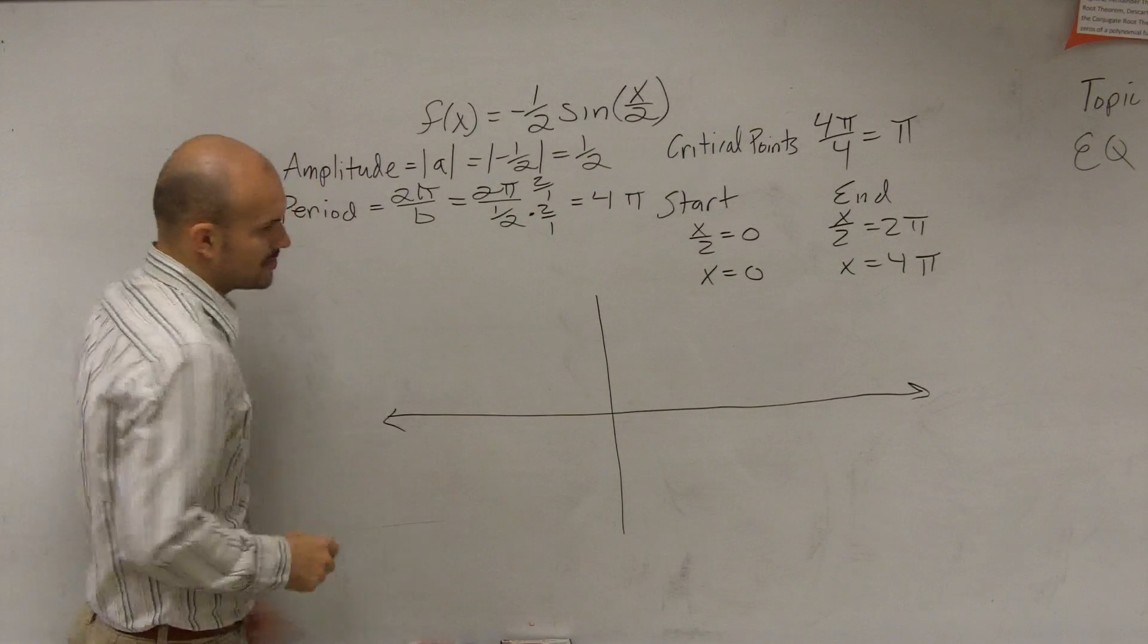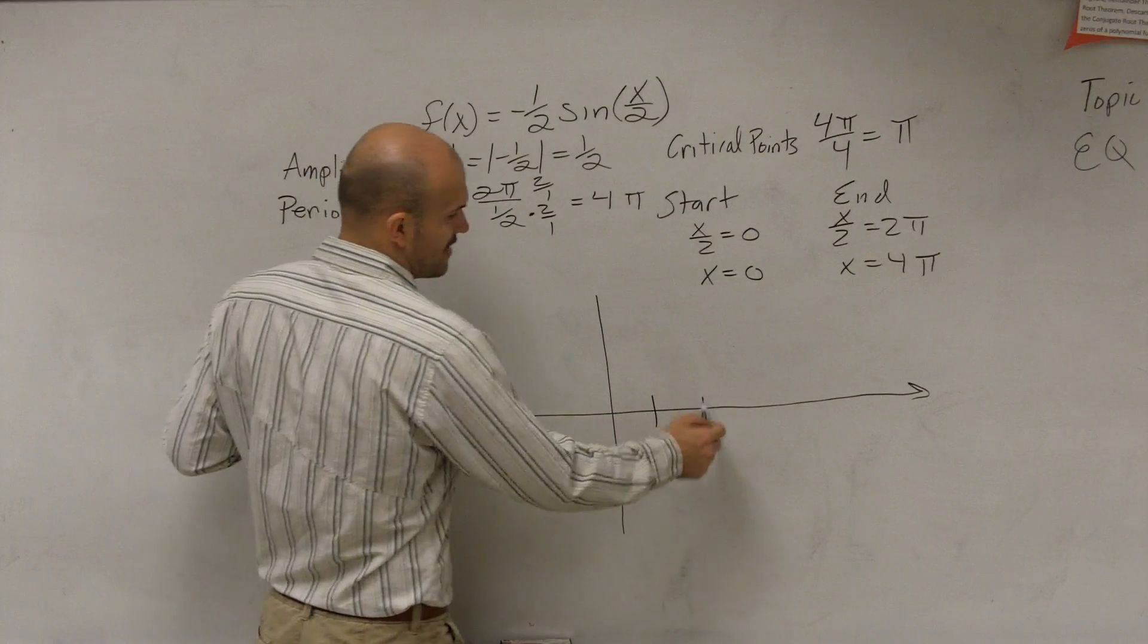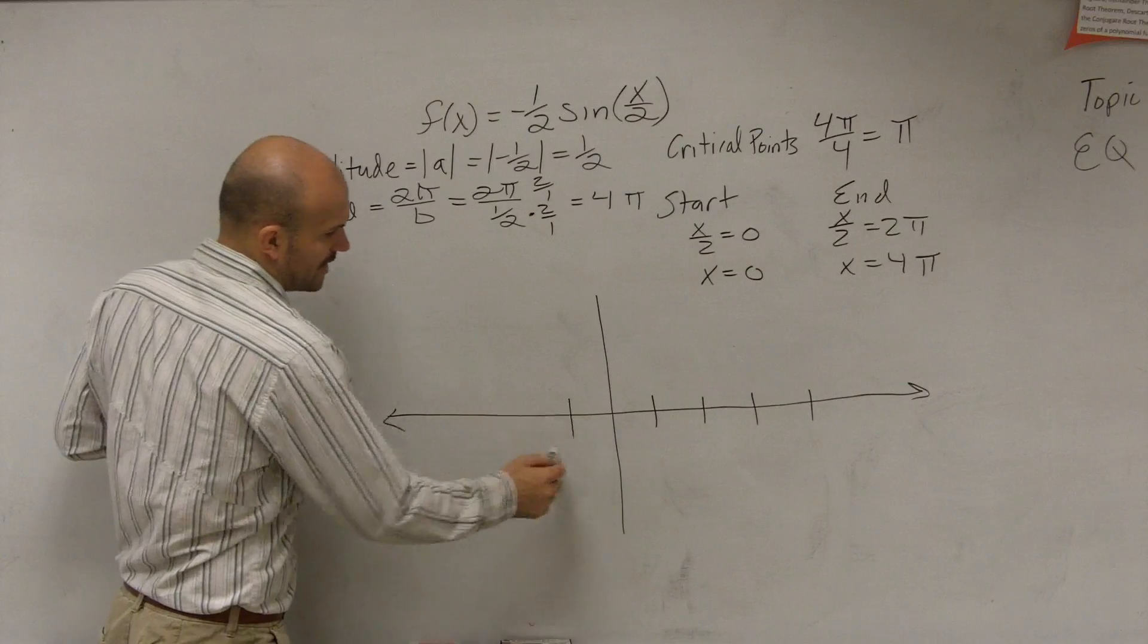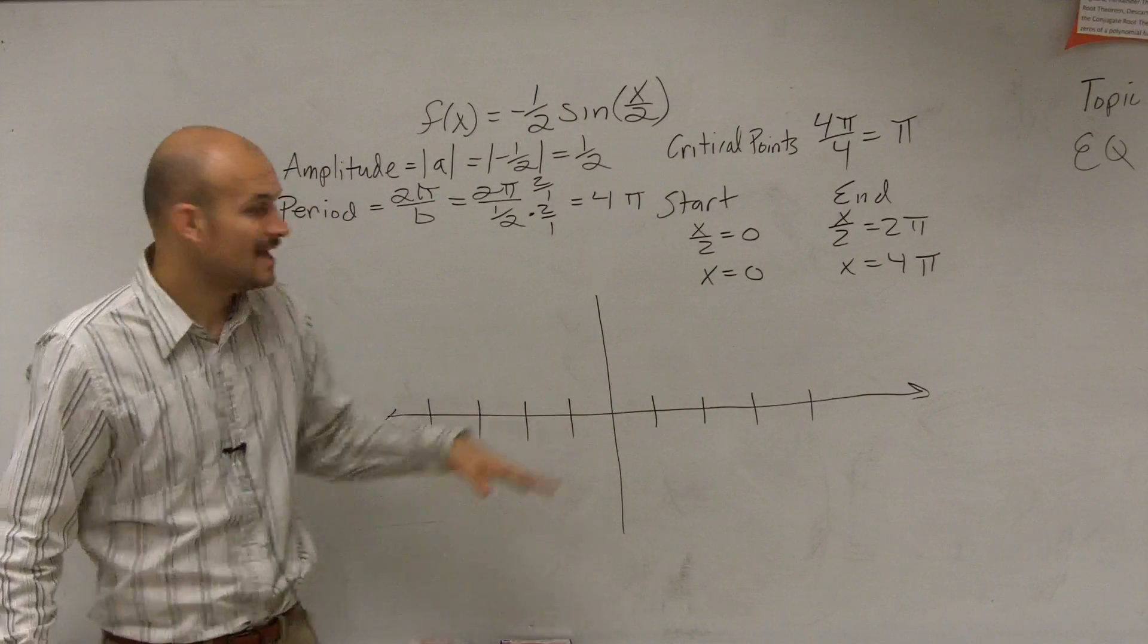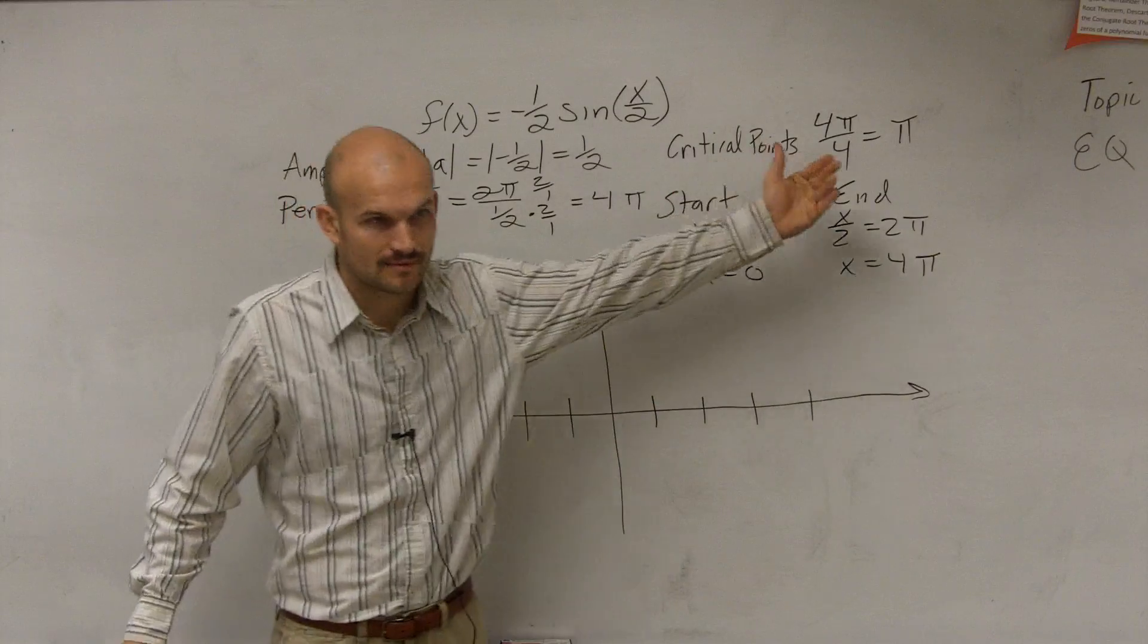Okay. So here's going to be kind of our starting line. Remember, there's four critical points that we talked about on graphing our thing, right? And we're going to go in the negative direction as well. Now, so what I said was, between each critical point was a distance of what?